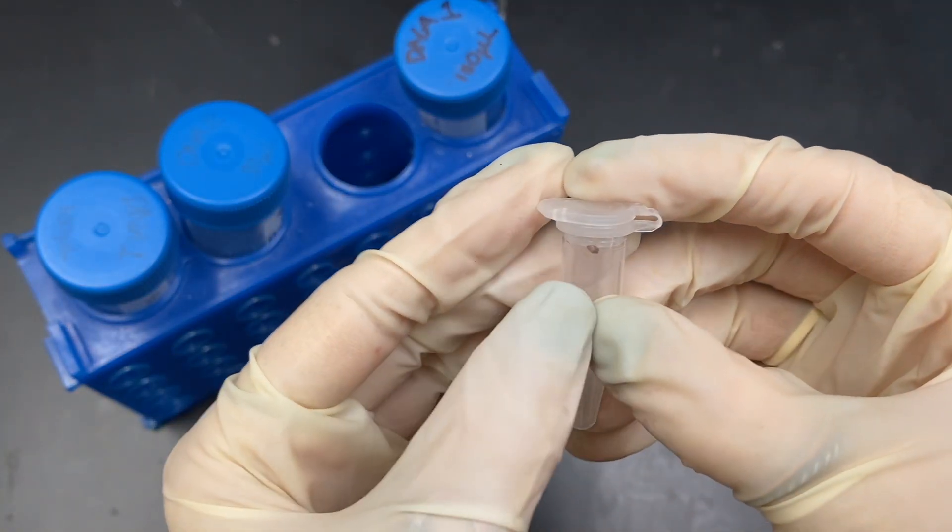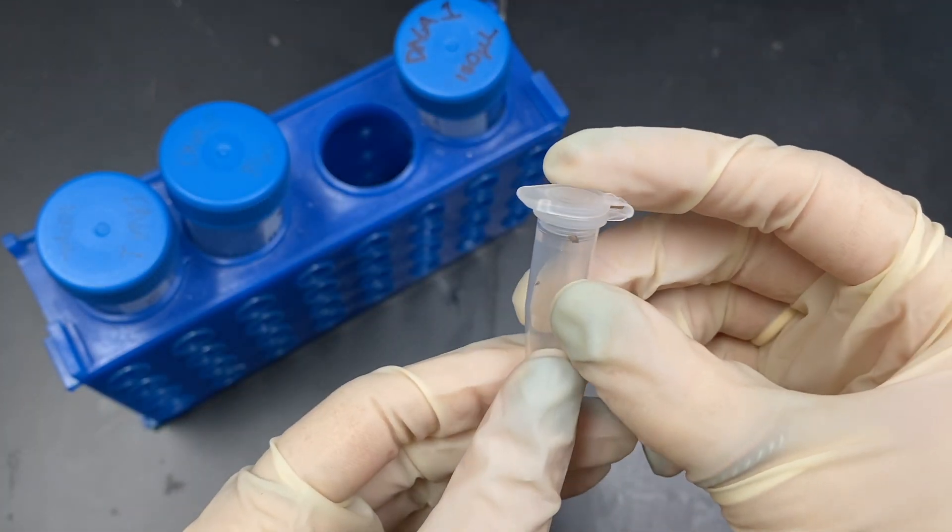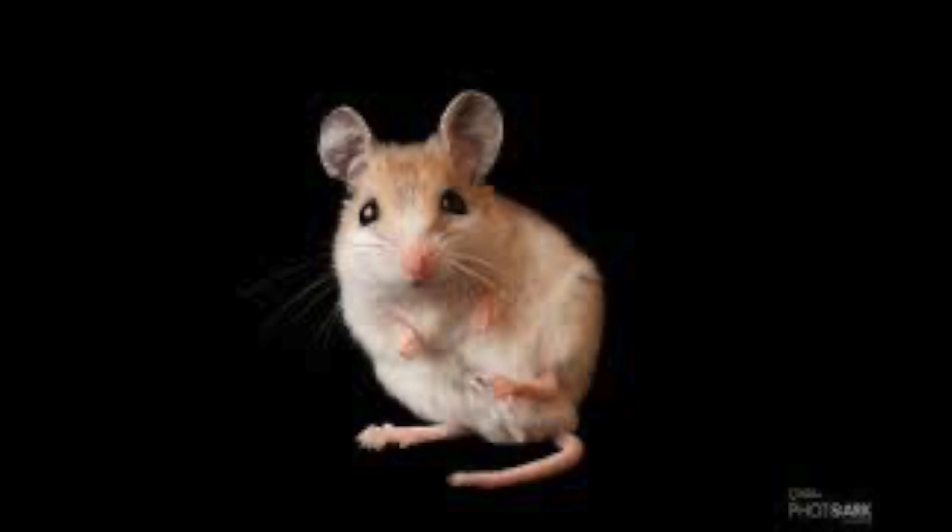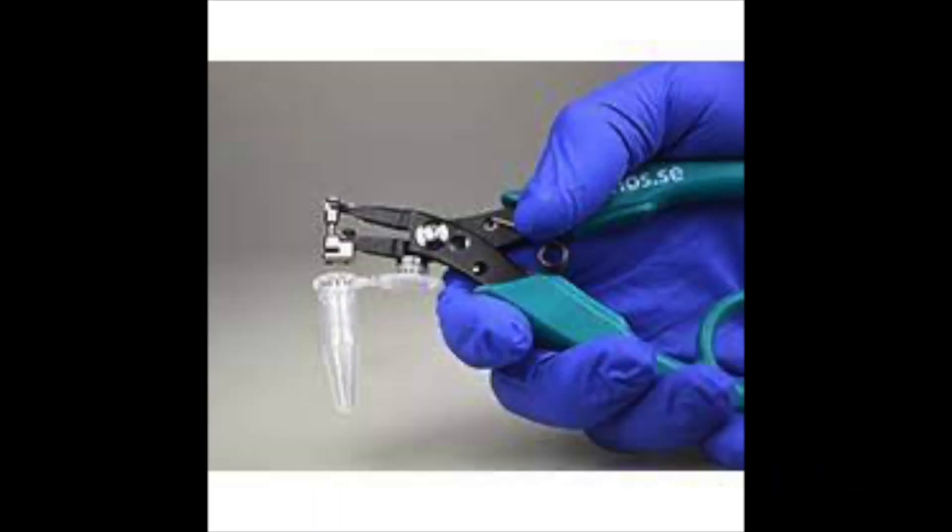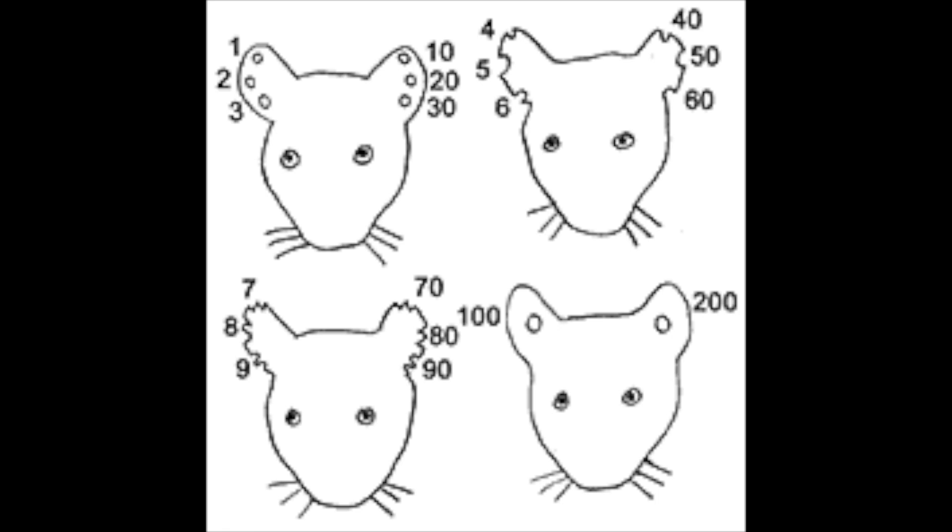To begin genotyping, you need a DNA sample. For your typical rat or mouse subject, scientists take a sample from the end of the tail, toenail, or their ear. I do ear because the small cut left in their ear can be used to identify the subject later on.